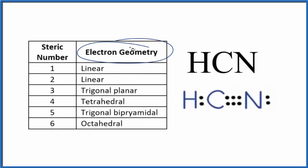When we look at electron geometry, we need to look at all of the things bonded to the central atom. In this case, that's this carbon right here.